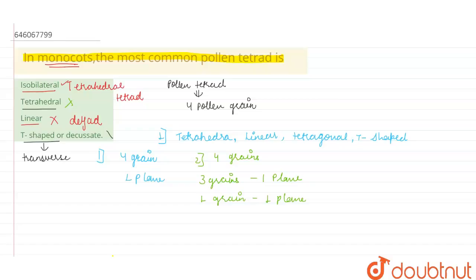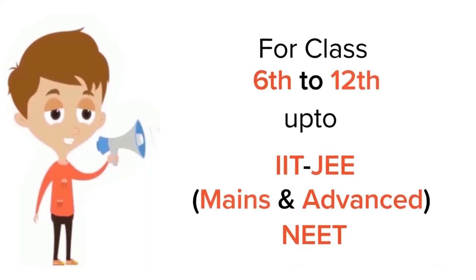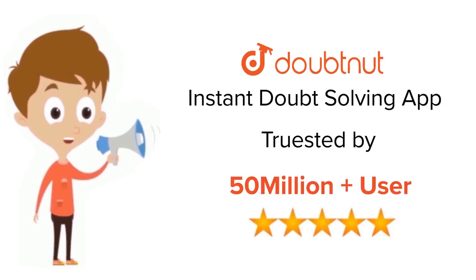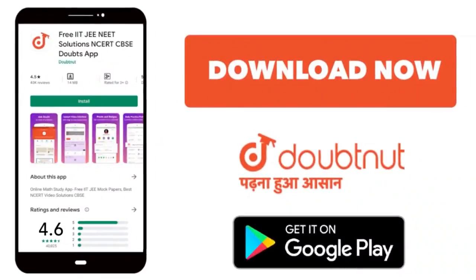So the correct answer for this question is isobilateral. In monocots, the most common pollen tetrad is isobilateral. Thank you. For classes 6 to 12, IIT JEE, and NEET level, trusted by more than 5 crore students — download the DoubtNet app today.